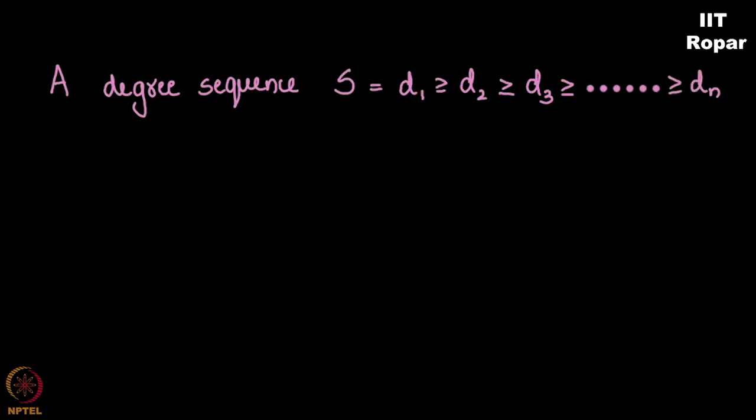A sequence is a degree sequence D1 ≥ D2 ≥ D3 and so on ≥ Dn with D1 ≤ N-1, where N is the number of vertices.